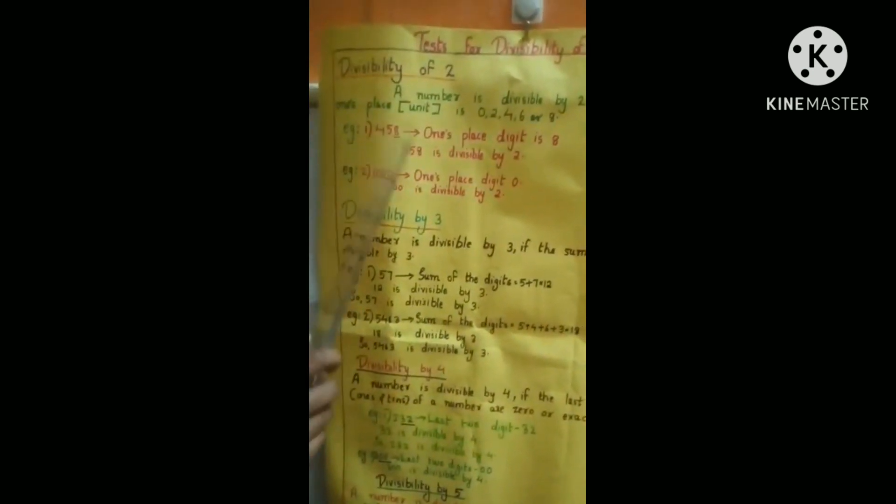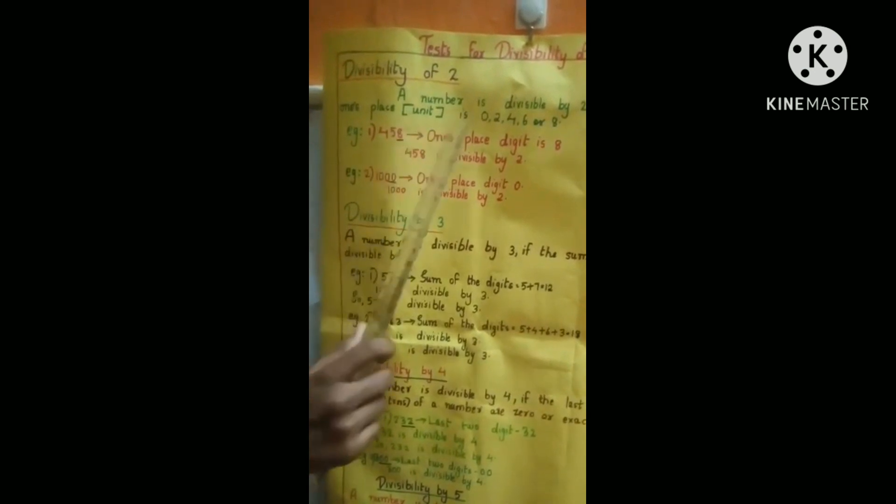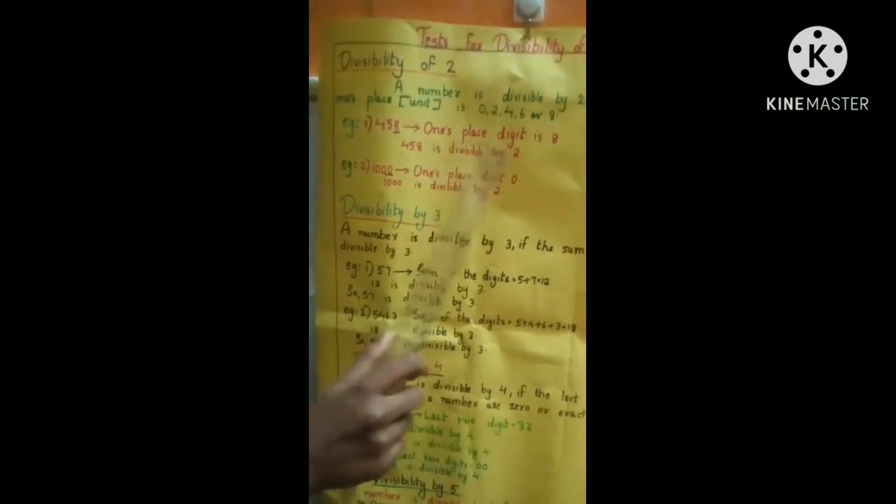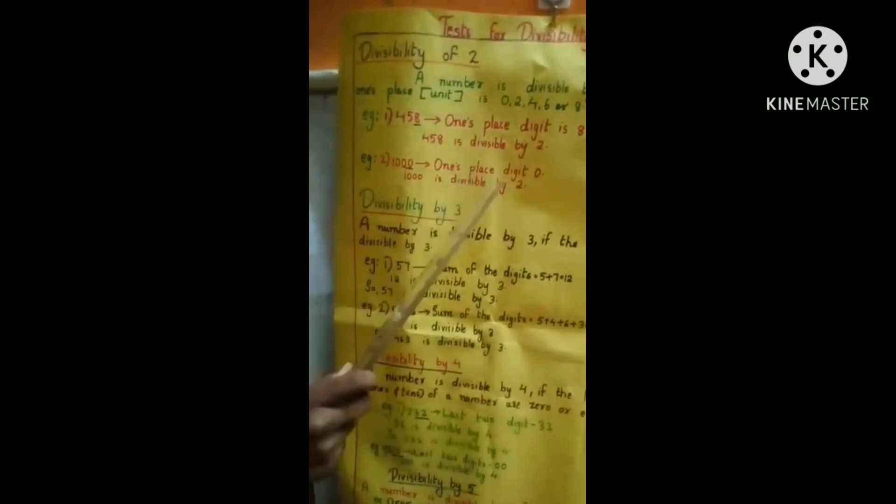Now I am going to introduce the test for divisibility of numbers. Divisibility by 2: a number is divisible by 2 if the digit at the ones place is 0, 2, 4, 6, or 8. For example, 458 — the ones place digit is 8, so 458 is divisible by 2. Another one: 1000 — the ones place digit is 0, so 1000 is divisible by 2.